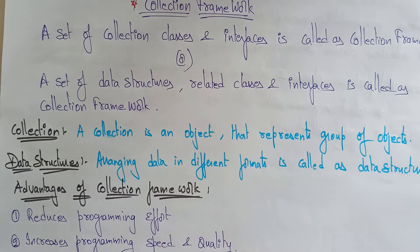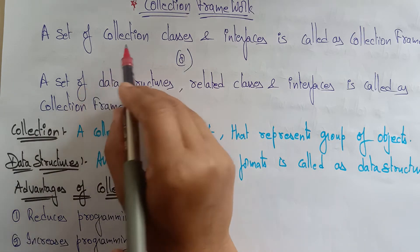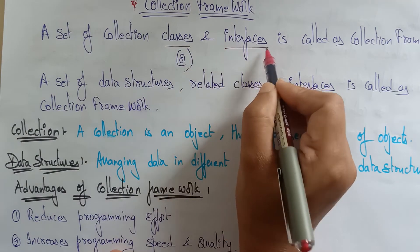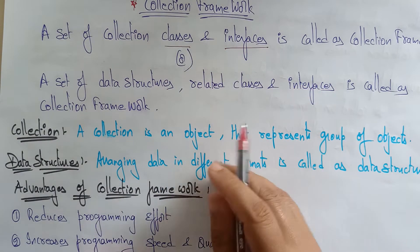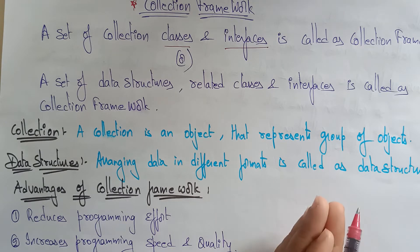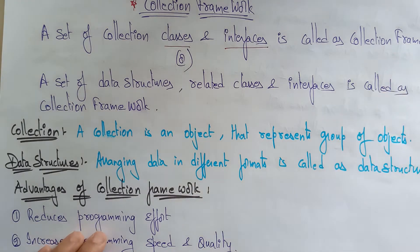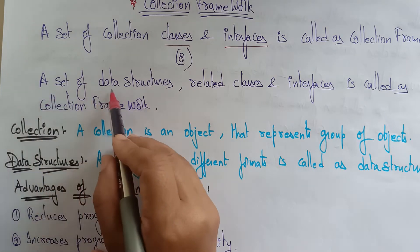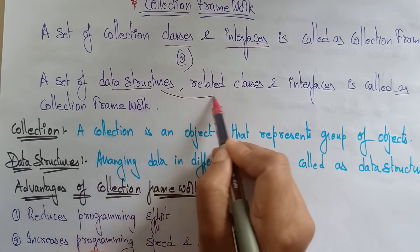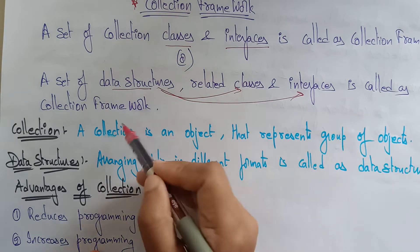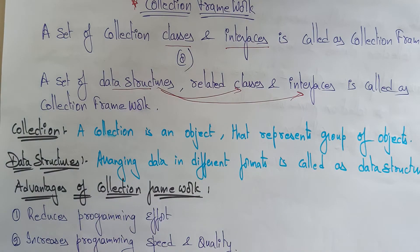A collection framework is nothing but a set of collection classes and interfaces — we usually call it a collection framework. Or you can also say it is a set of data structures which are related to classes and interfaces — we call it a collection framework.